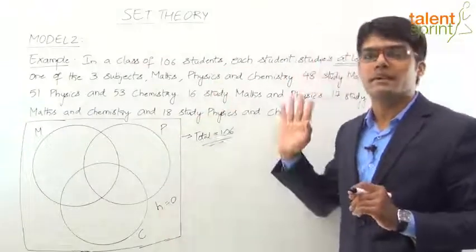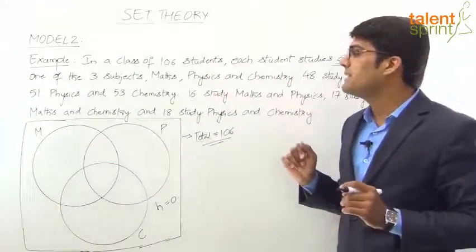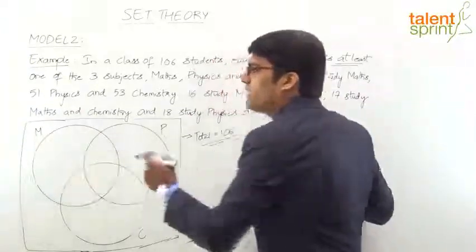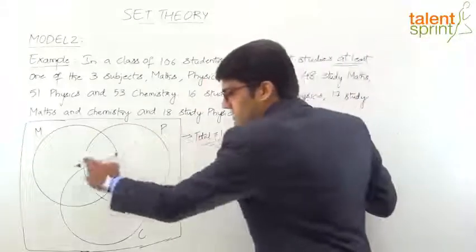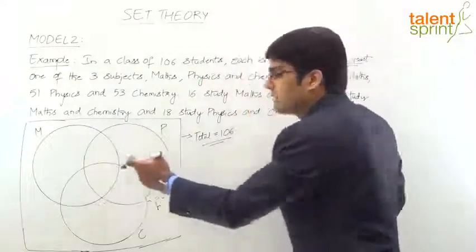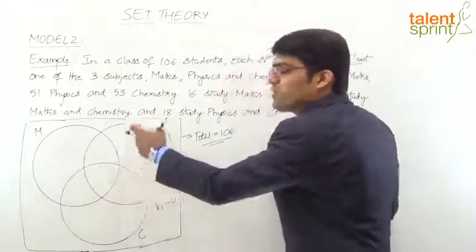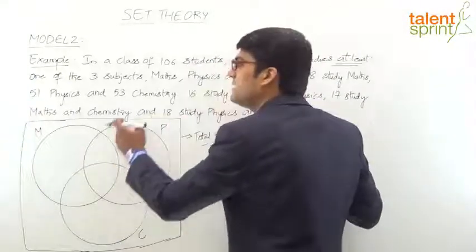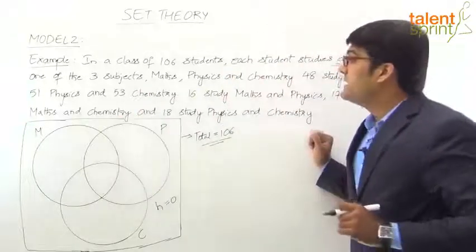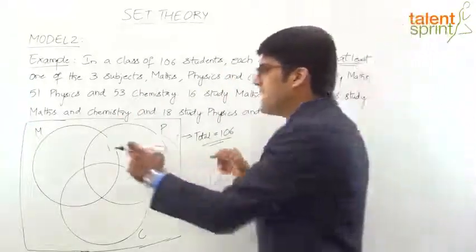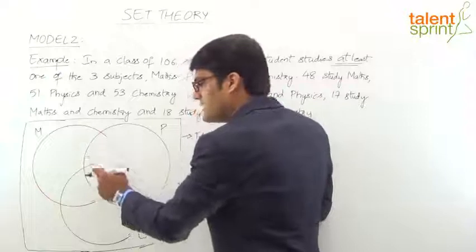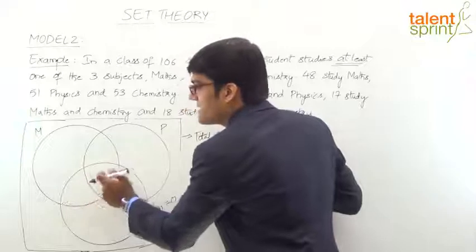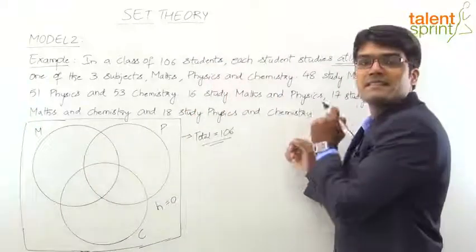Now let's look at the rest of the data. 48 study Maths — so the total of the Maths circle is 48. 51 study Physics — so the second circle total is 51, covering all 4 regions within it. 53 study Chemistry — so those 4 regions total 53. Then: 16 study Maths and Physics, so those two overlapping portions total 16.